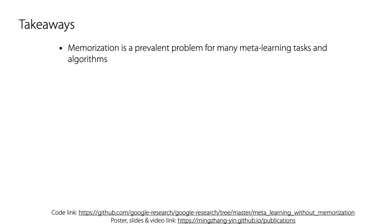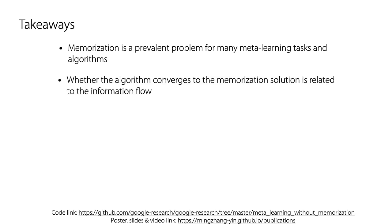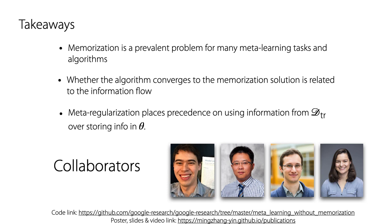Here are some takeaways. Memorization is a prevalent problem for many meta-learning tasks and algorithms. Whether the algorithms converge to the memorization solution is related to the information flow. Meta-regularization places precedence on using information from task training data over storing information in the parameters. Thanks for my wonderful collaborators.